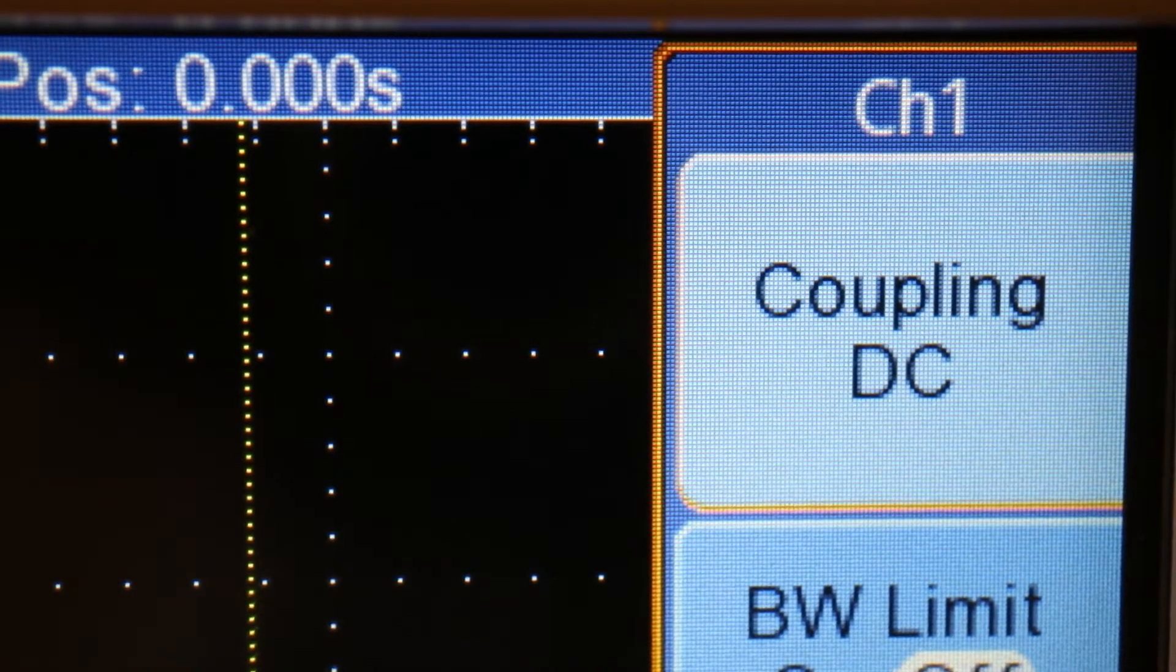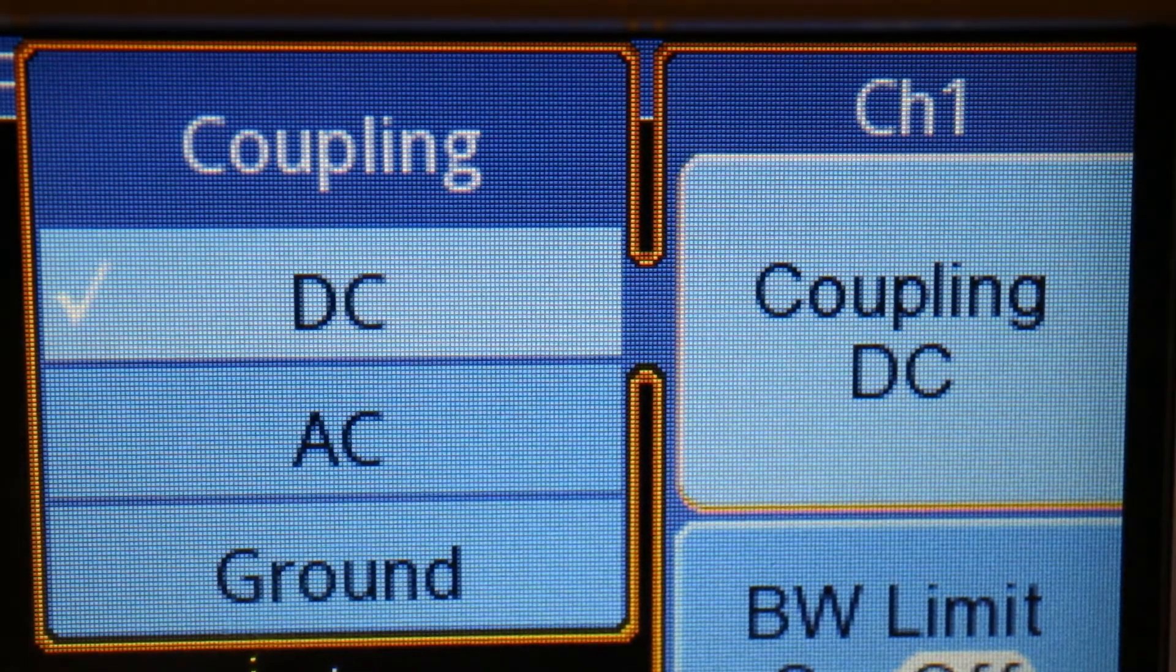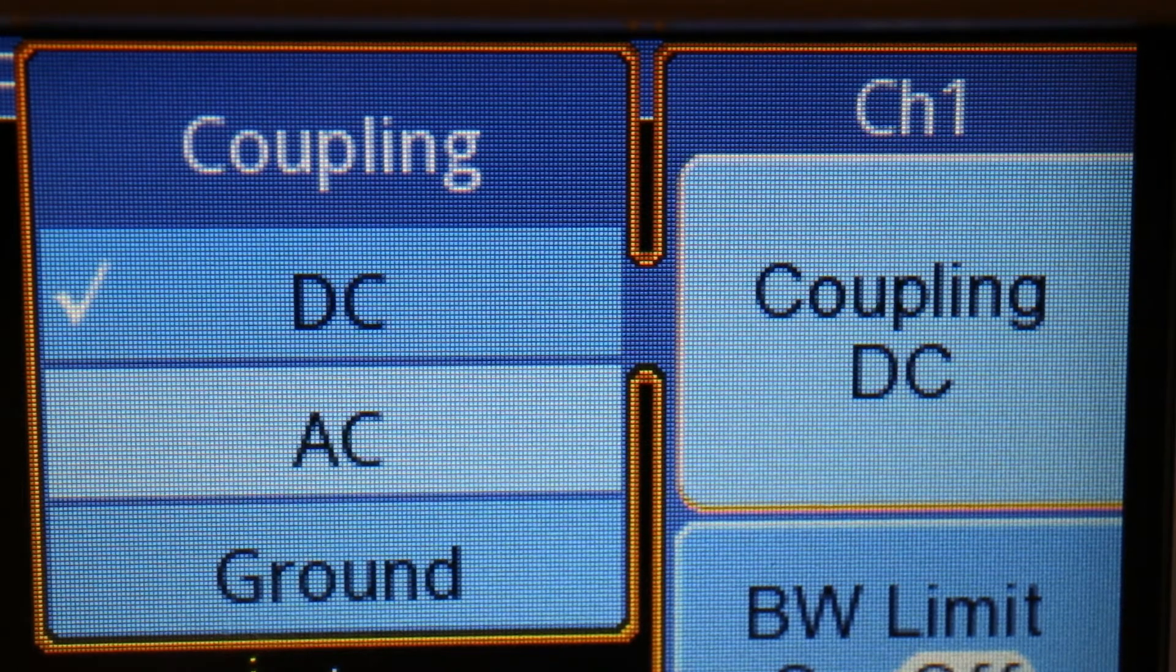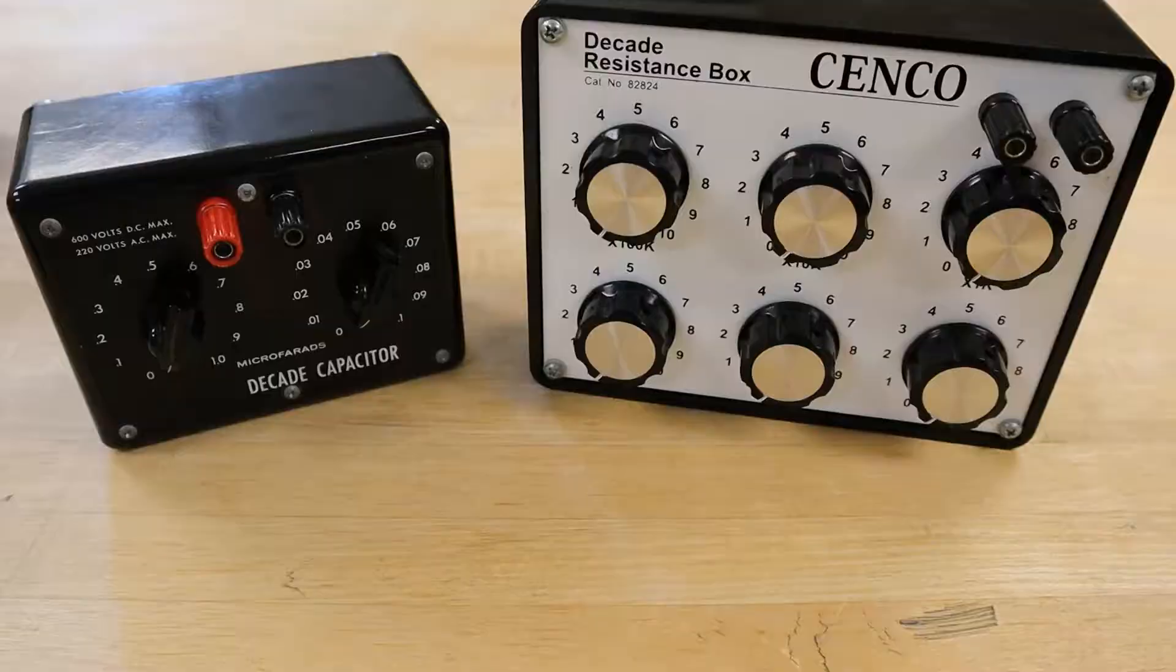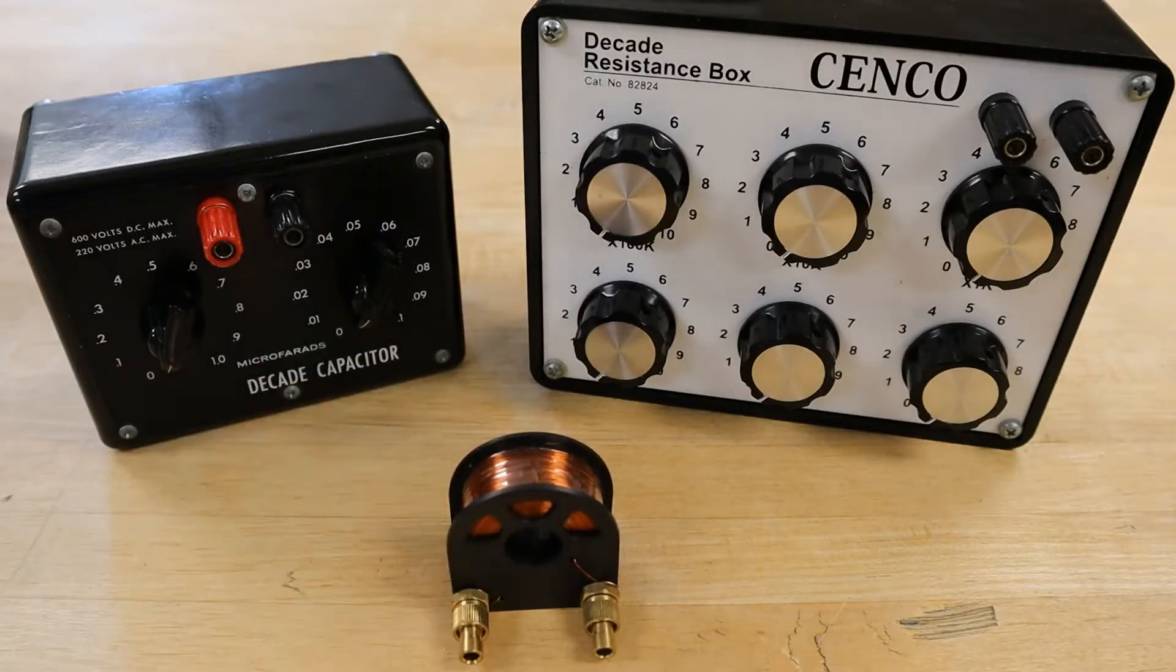But in this lab, we'll explore how the characteristics of these components change when alternating current, or AC, is utilized in a circuit. In addition, a new component called an inductor will be introduced, with the SI unit of Henry.